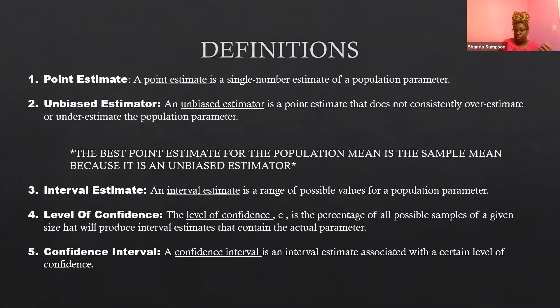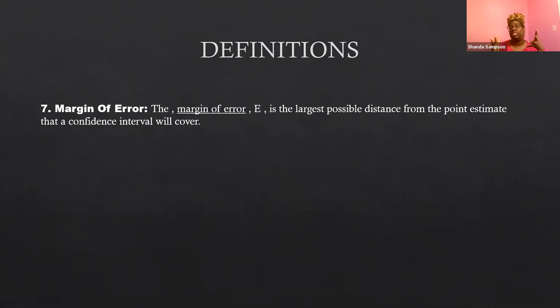A confidence interval is an interval estimate associated with a certain level of confidence. If you look at any polling, it should say that 55% of the people are going to vote for this person plus or minus something, plus or minus 6%, plus or minus 3%, plus or minus something. But that plus or minus something is called your margin of error.